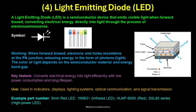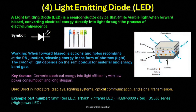When forward biased, LEDs allow current to flow and emit light, but when reverse biased, they block current like a normal diode, although they are not designed to withstand high reverse voltages. The key feature of an LED is its ability to convert electrical energy into light efficiently, producing very little heat, consuming very low power, and lasting much longer than traditional light sources such as incandescent or fluorescent lamps. LEDs have no fragile filaments, making them more durable and reliable with a typical operating lifespan of up to 50,000 hours or more.